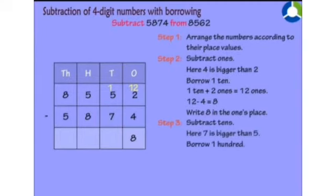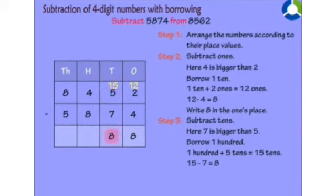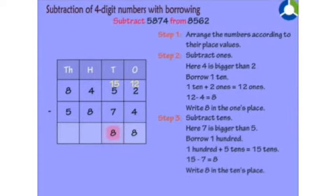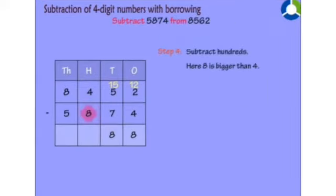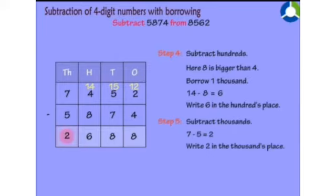Step 3: Subtract 10's. Because we borrowed 1 ten earlier, 1 ten plus 5 tens makes 15 tens. Now 15 minus 7 equals 8. Write 8 in the 10's place. Step 4: Borrow one thousand — this makes 14 hundreds. Now 14 minus 8 equals 6. Write 6 in the hundreds place. Step 5: Subtract thousands — 7 minus 5 equals 2. Write 2 in the thousands place.